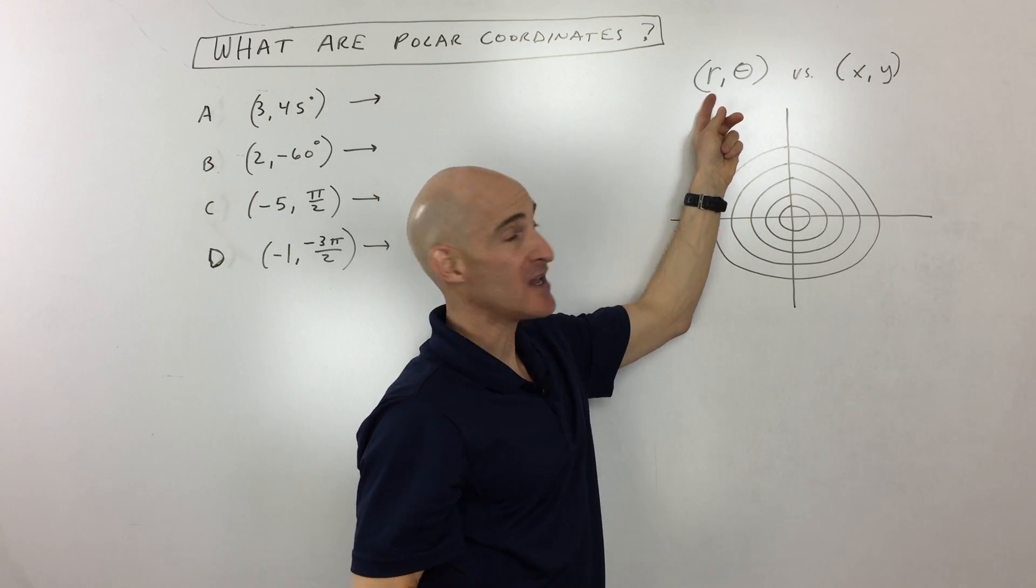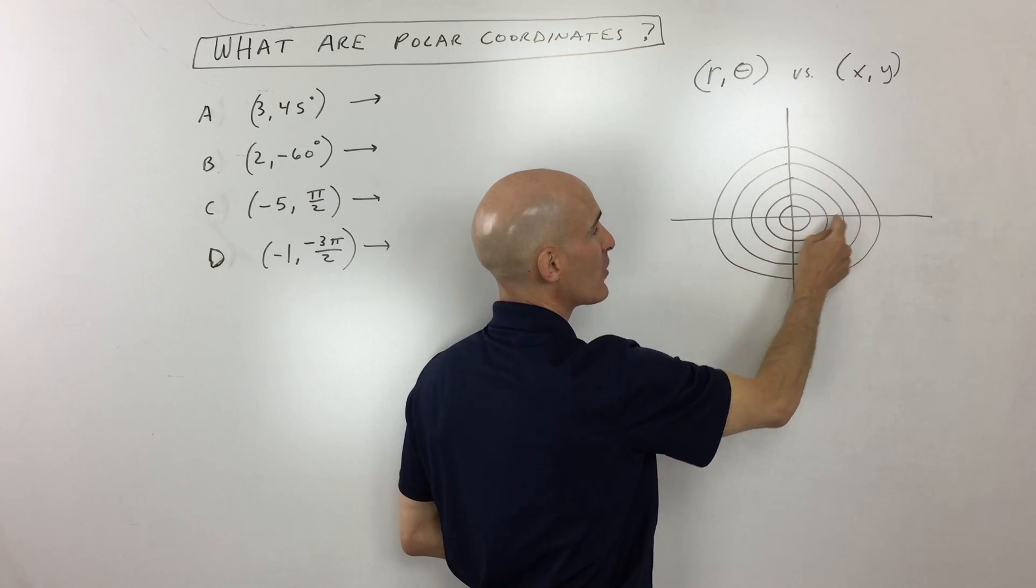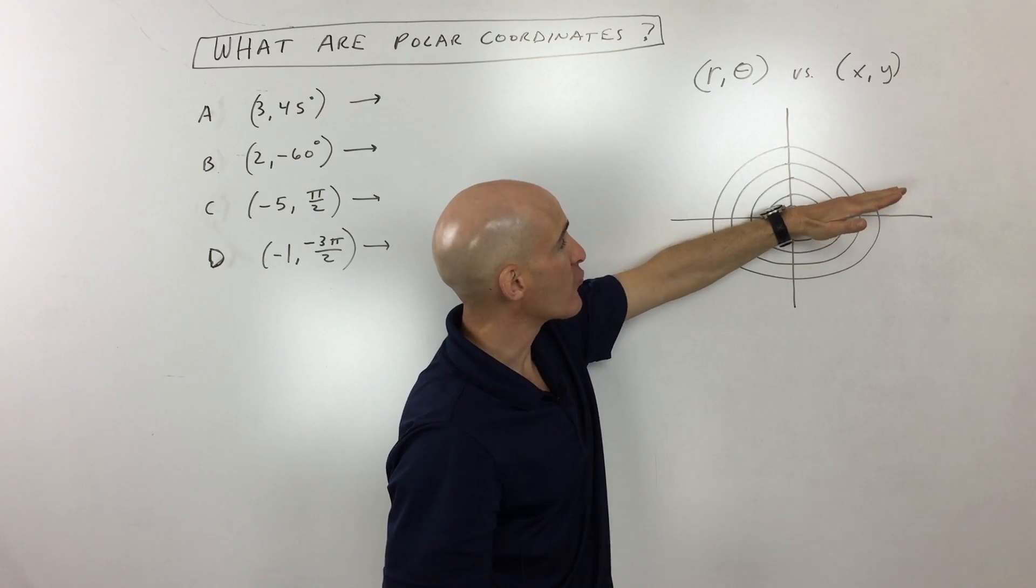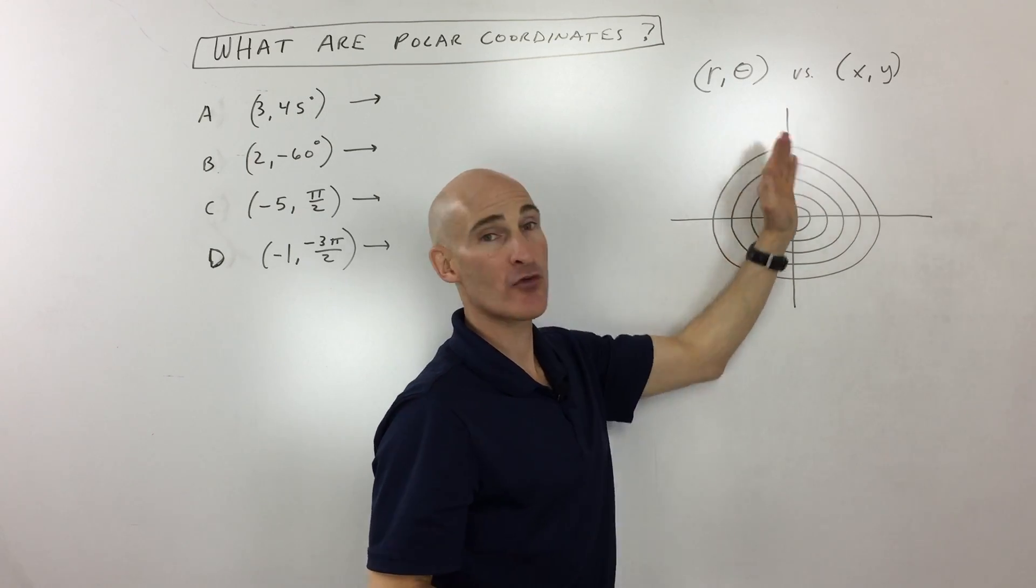So we've got r, which is the radius. You can see this is like polar graph paper here. You're going out to a specific radius, a circle of radius one, a circle of radius two, radius three, and so on. And then you're rotating along that circle a certain number of degrees or a certain number of radians.